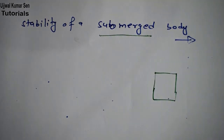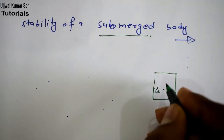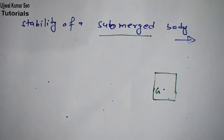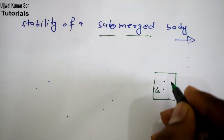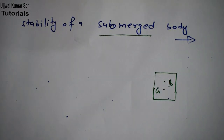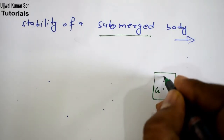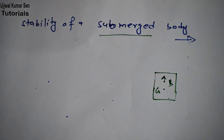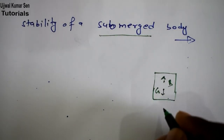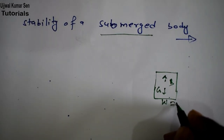If there is any body, we have two most important points. One is G, that is the center of gravity, and another one is B, which is the center of buoyancy. Buoyancy is an upthrust force, known as the buoyant force, acting upward. Because of gravity there is also a force acting downward, that is W, which equals mg.